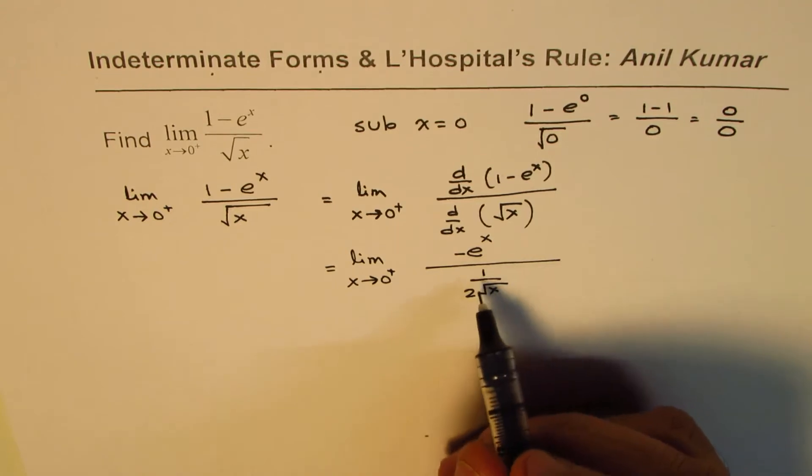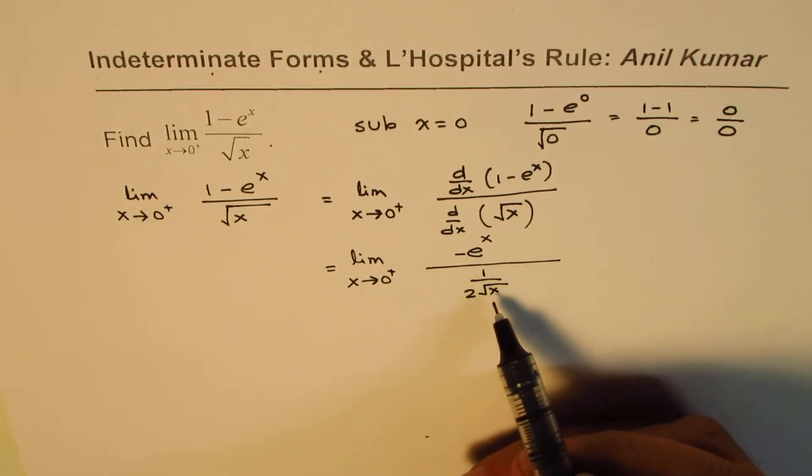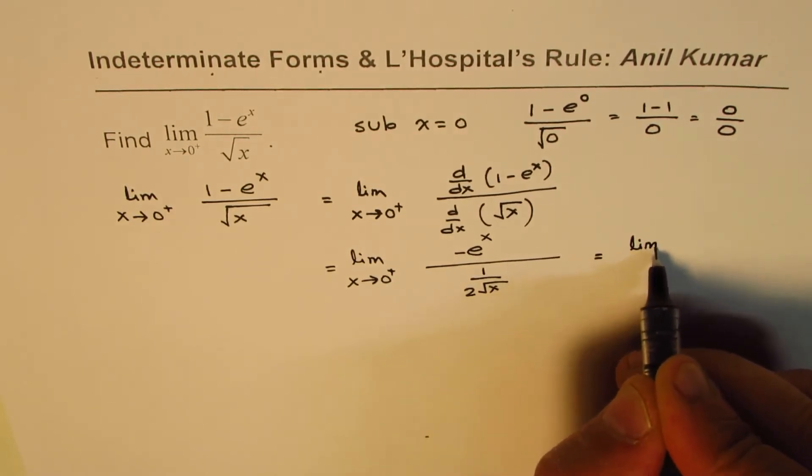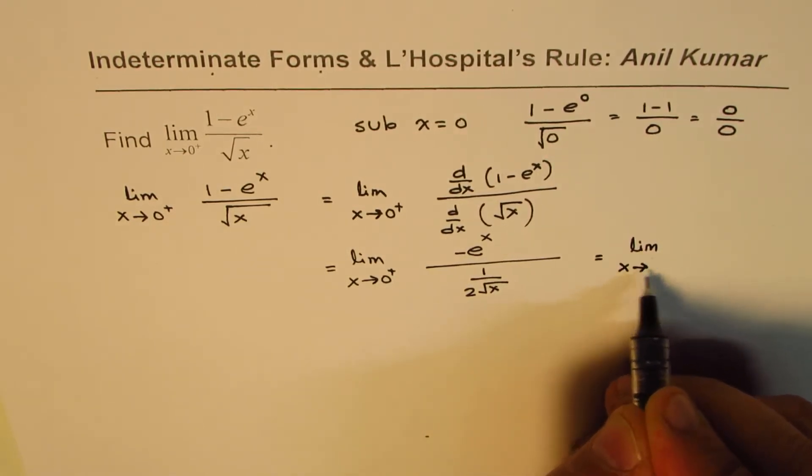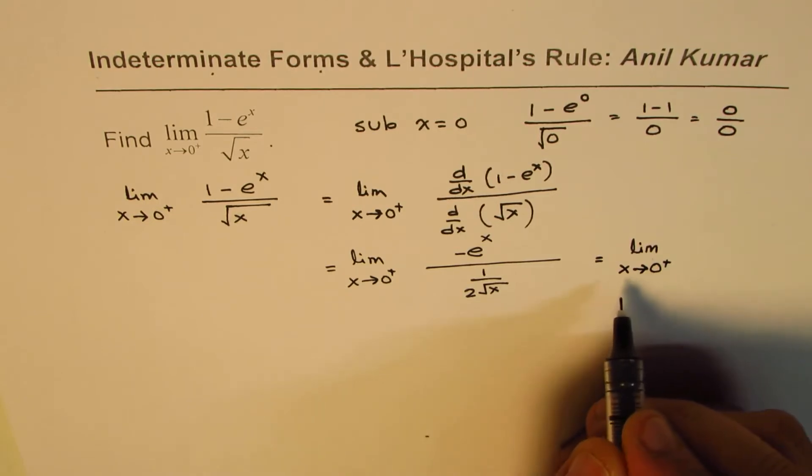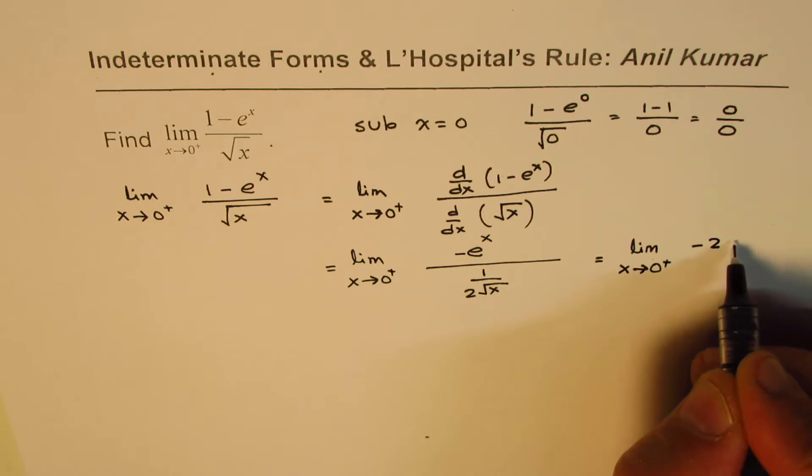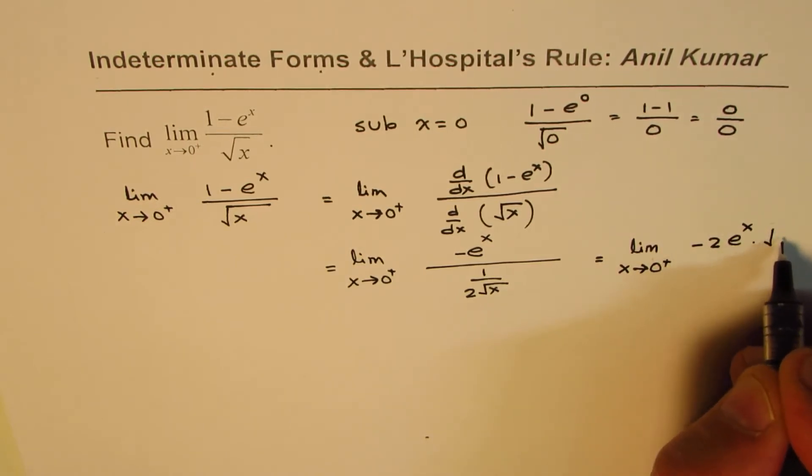Now at this stage we can write this as equal to limit x approaches 0 from the positive side. You can take it in the numerator, so you get minus 2e^x times square root of x. Now if I substitute 0, what do I get? If I substitute 0 here I get minus